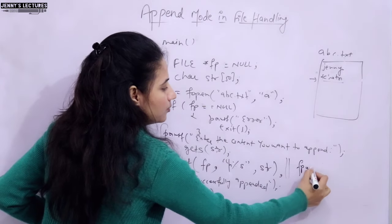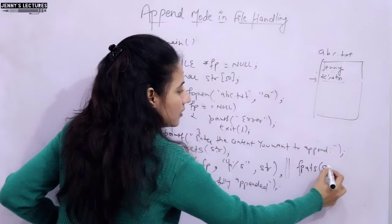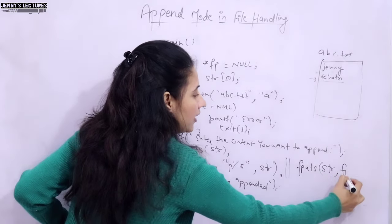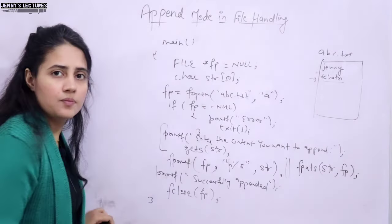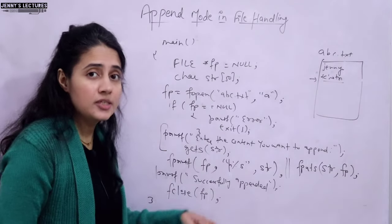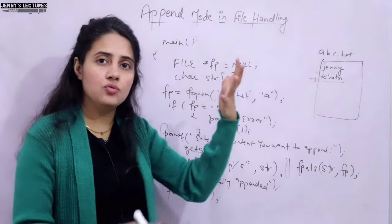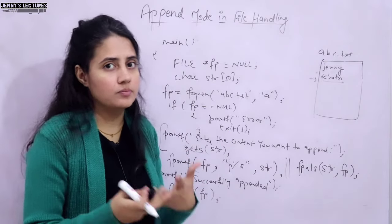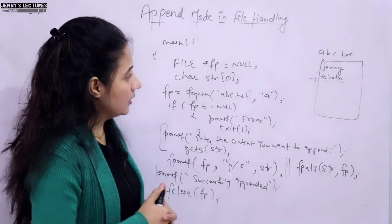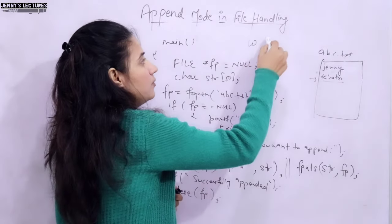Instead of fprintf, you can use fputs — just provide the string str and the file pointer fp, and it does the same thing. If you use fputc, it adds only one character at a time, so put it in a while loop.